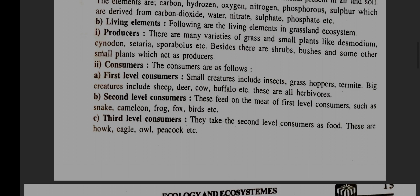Consumers — the consumers are as follows. First level consumers: small creatures include insects, grasshoppers, termites; big creatures include sheep, deer, cow, buffalo, etc. These are all herbivores.